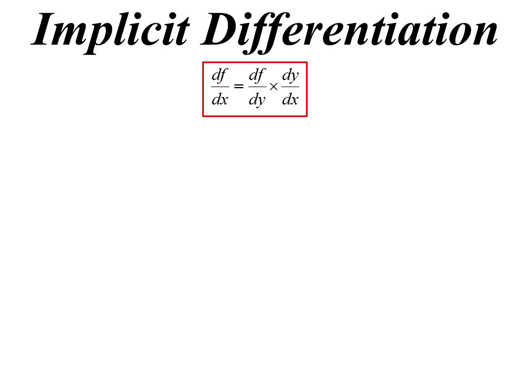So if I want to differentiate a function with respect to x, I could differentiate it with respect to y and then multiply it by dy/dx. So with y = x², what we're actually doing is differentiating both sides with respect to x. It's an equation — what you do to one side, you do to the other. We're differentiating y with respect to x, and on the right hand side we're differentiating x² with respect to x.